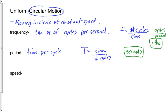Finally, speed. We know what speed is. The equation is v equals delta d over delta t. But we're going to modify it for uniform circular motion. The distance an object travels going around the circle once is the circumference, which equals 2πr — or π times the diameter. Both ways of writing it are fine.